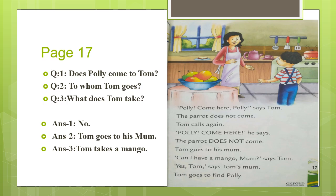Now let's move to page 17. Polly, come here Polly, says Tom. The parrot does not come. Tom calls again: Polly, come here, he says. The parrot does not come. Tom goes to his mom. Can I have a mango please? says Tom. Yes Tom, says Tom's mom. Tom takes a mango and then goes back out to find Polly.